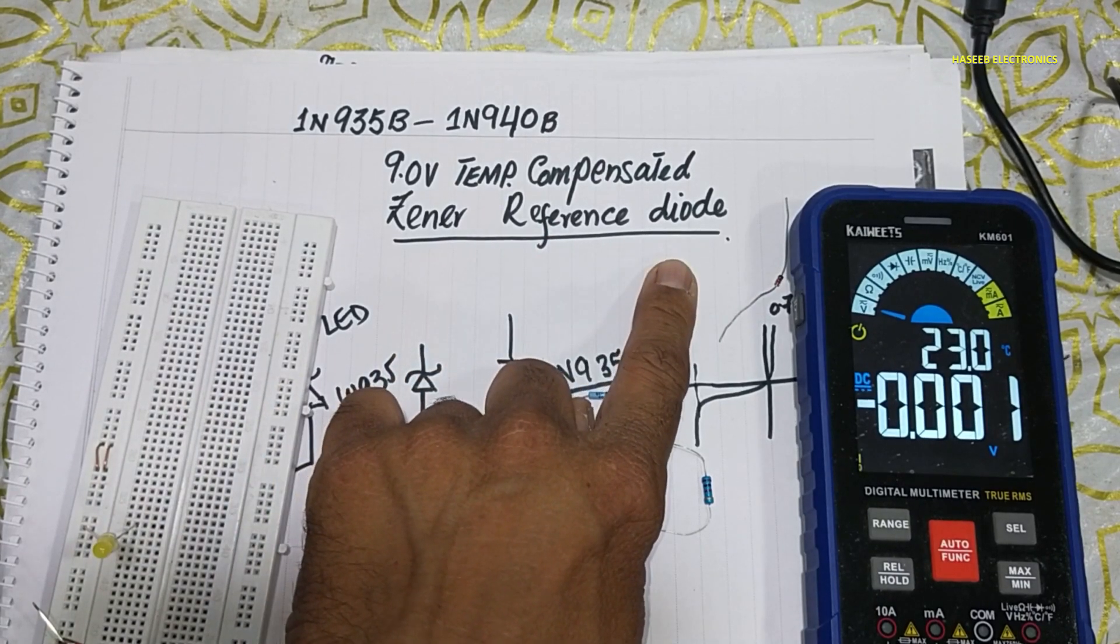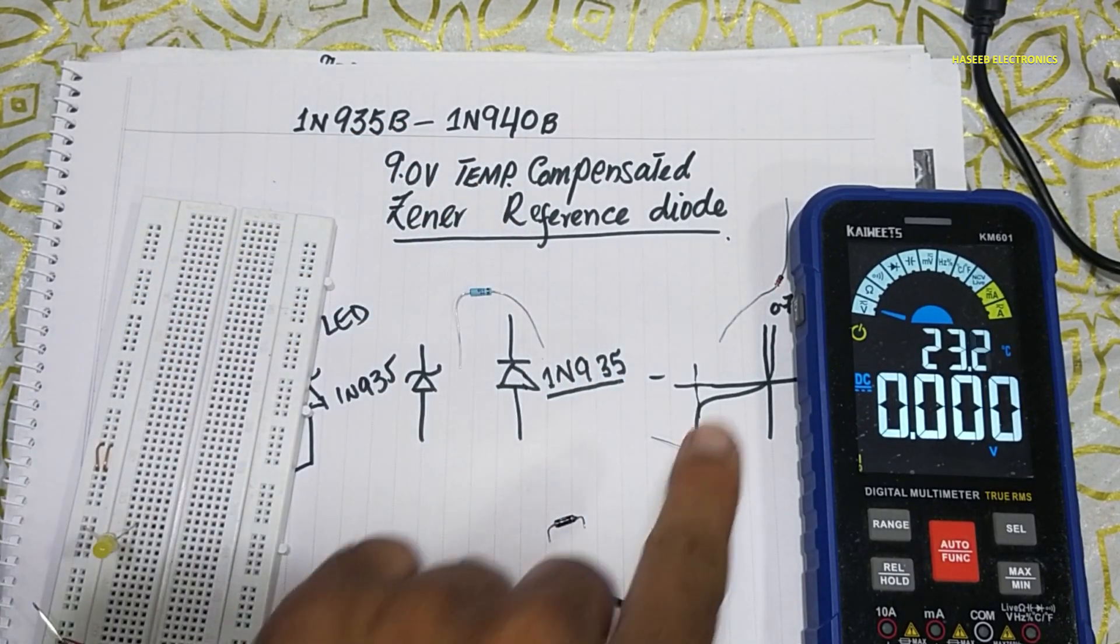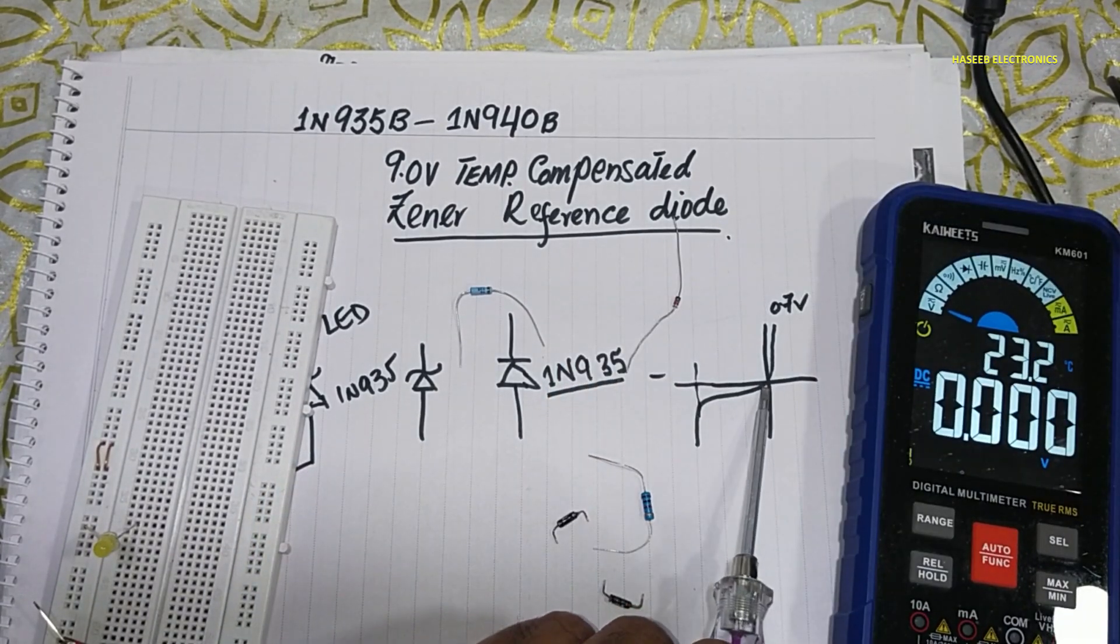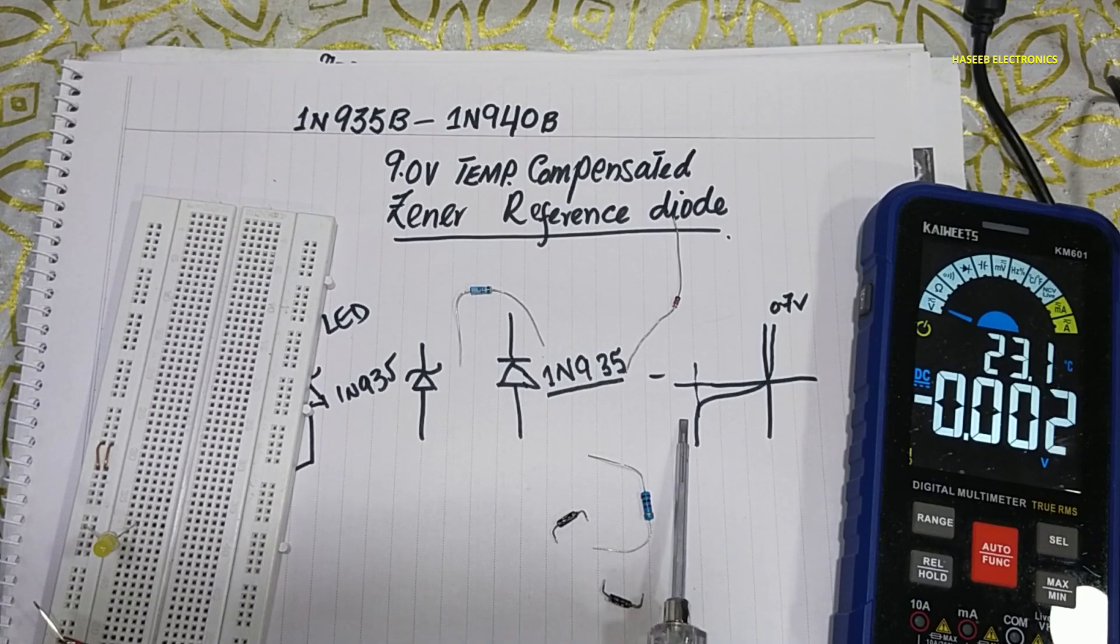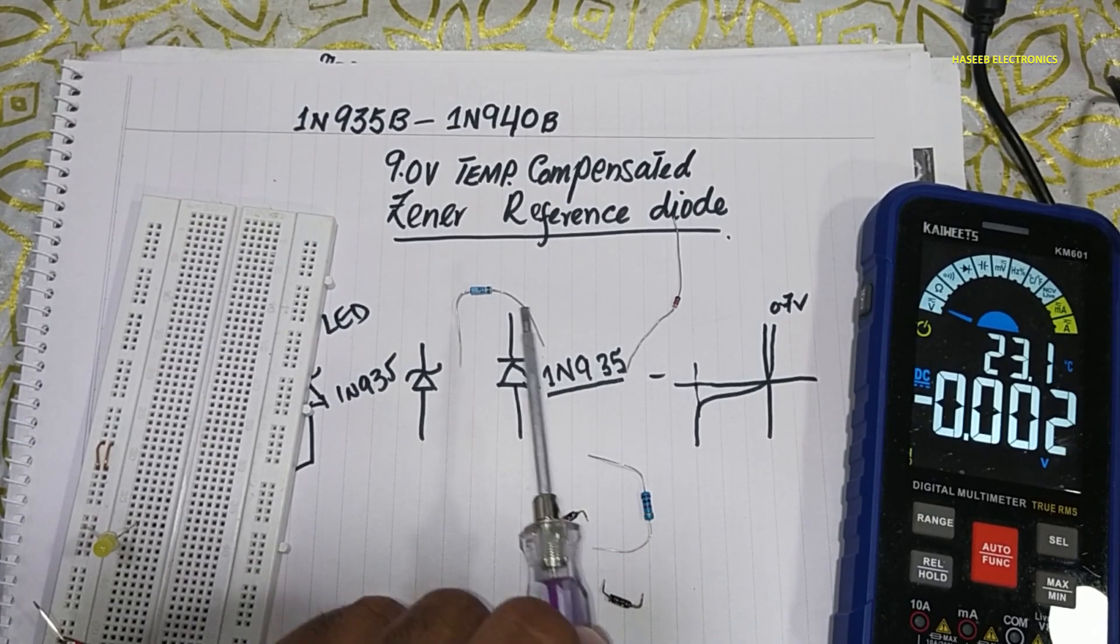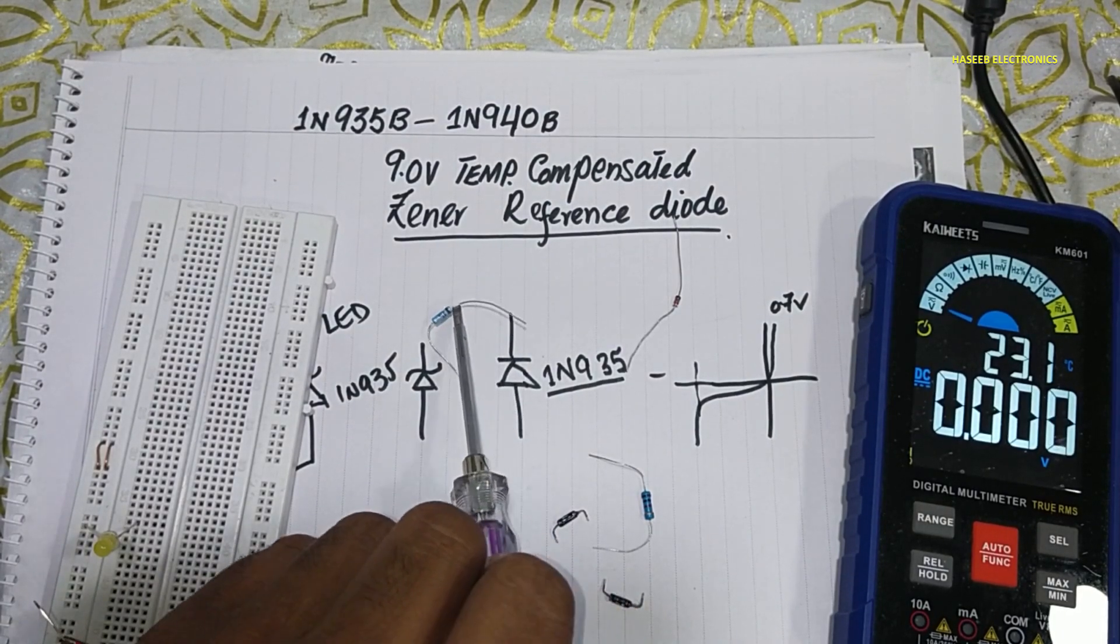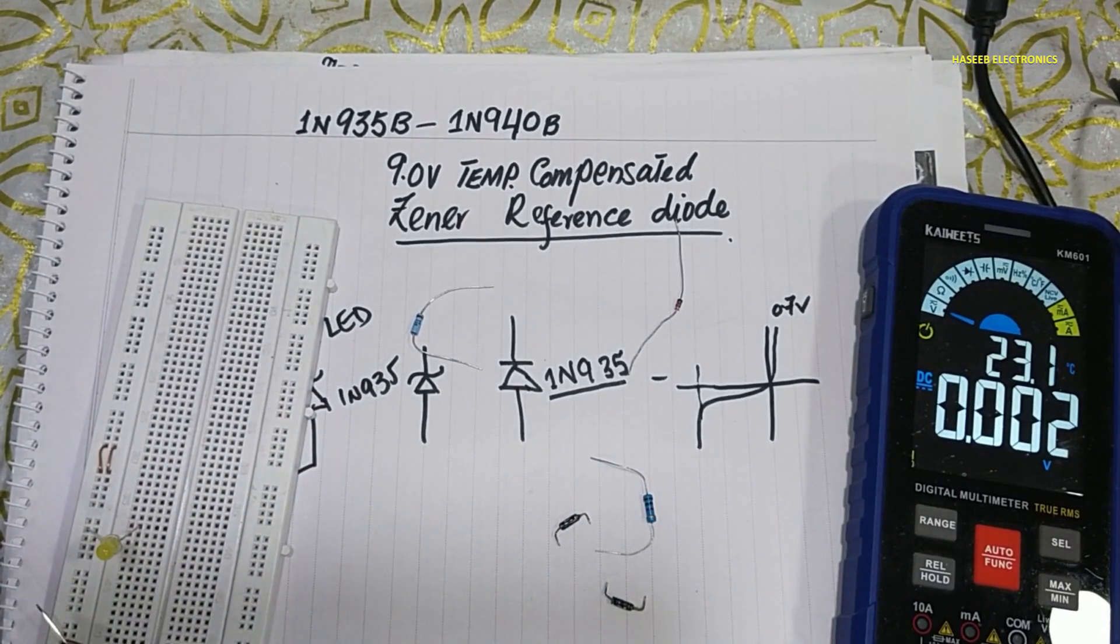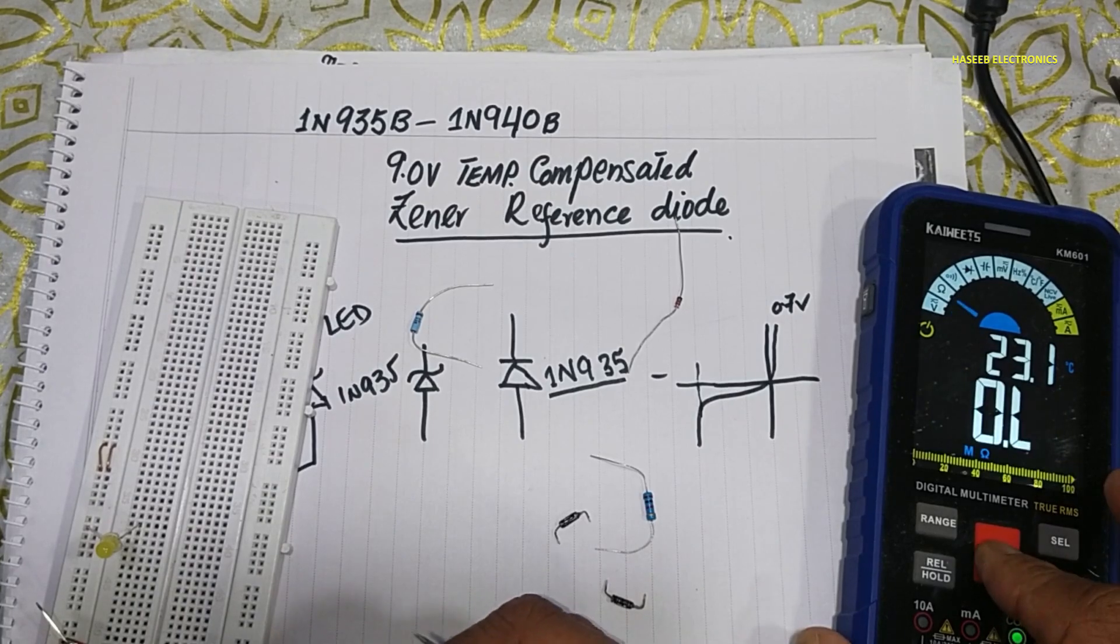When we say 9 volt zener, a simple zener works in the zener region in reverse voltage. In reverse bias, this one also works in the reverse region. But when we see zener, zener have forward voltage.